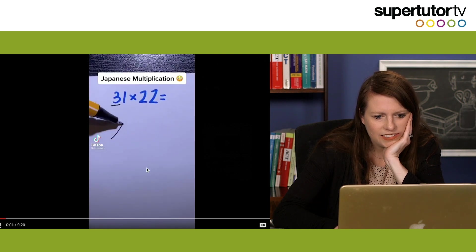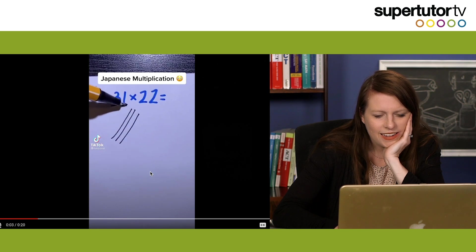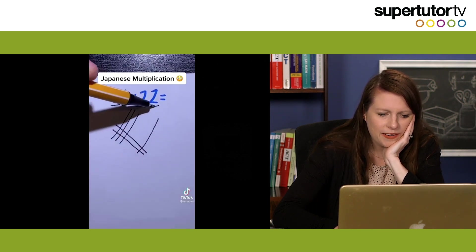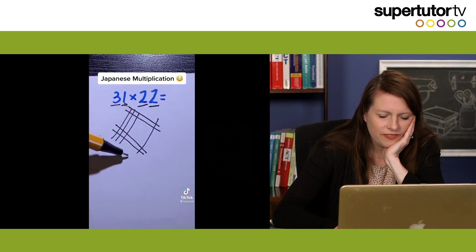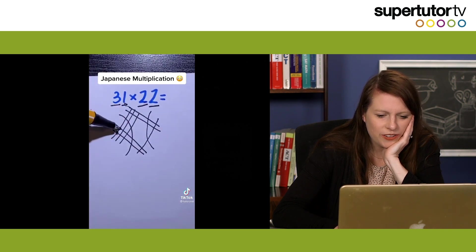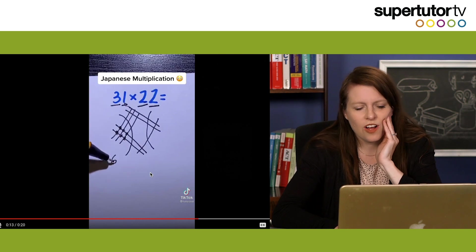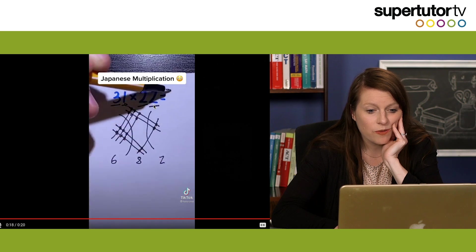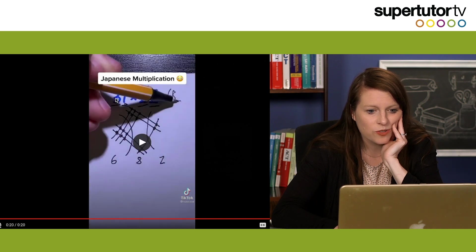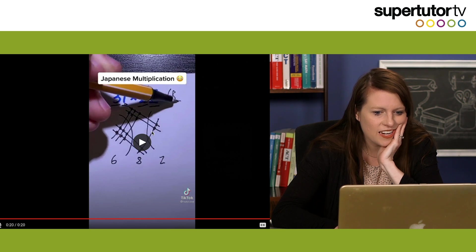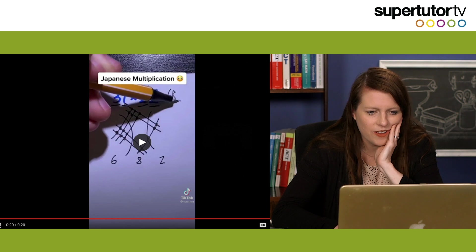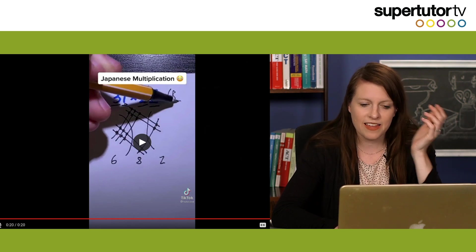I like this because it's pretty. But not sure if I'm ready to draw all of these lines every time I want to do a problem. I could easily do 31 times 20, which would be 310, 620 plus 62, which would be 682. And I can kind of mental math that out. And I'm kind of okay with how I do it. But that was pretty. I like that Japanese math.